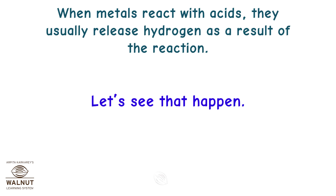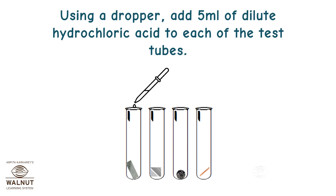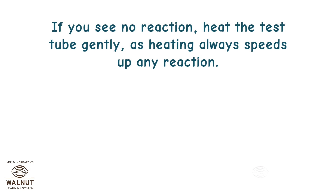When metals react with acids, they usually release hydrogen as a result of the reaction. Take four test tubes. Put a magnesium ribbon in one, a small piece of aluminium in the second, iron filings in the third, and a small copper wire in the fourth. Using a dropper, add 5 ml of dilute hydrochloric acid to each test tube. If you see no reaction, heat the test tube gently as heating always speeds up any reaction.